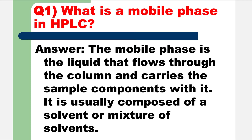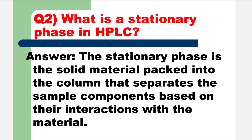Question number one is: what is a mobile phase in HPLC? The mobile phase is the liquid that flows through the column and carries the sample component with it. It is usually composed of a solvent or mixture of solvents.